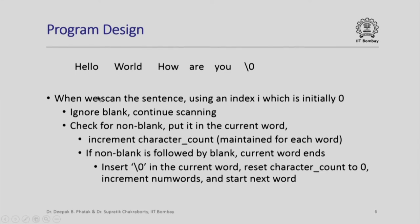Somewhere, we will come across non-blank characters. When we check for non-blank character, we will have to put it in the current word. So, obviously, the current word, the word count or the character count for that word will all have to be initialized properly. Since, we are going to use a two-dimensional array, the current word will be indicated by an index, which refers to a different row of the word when the word changes. Within a word, we will increment the character count, which is maintained for each word.